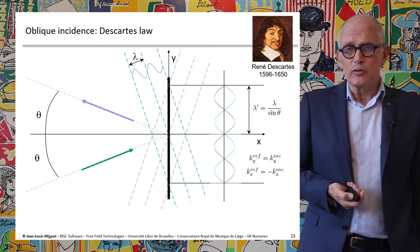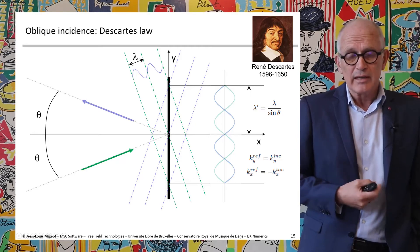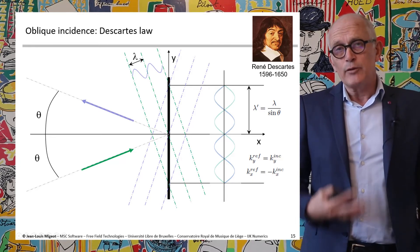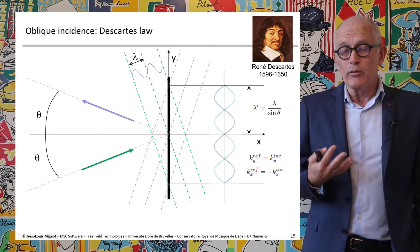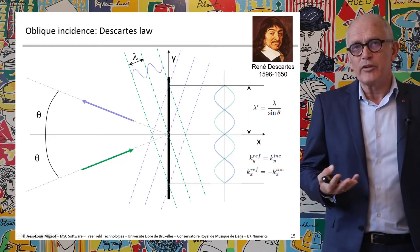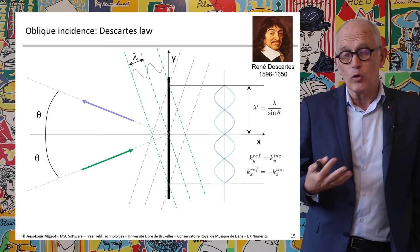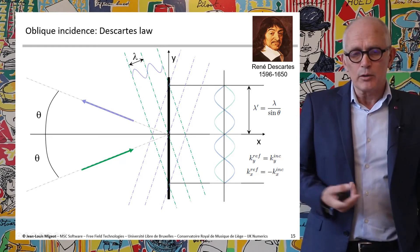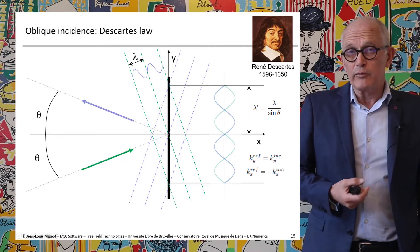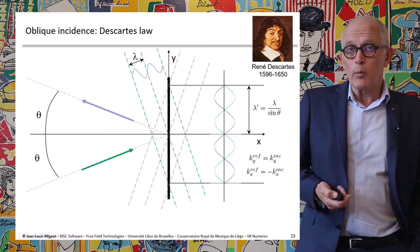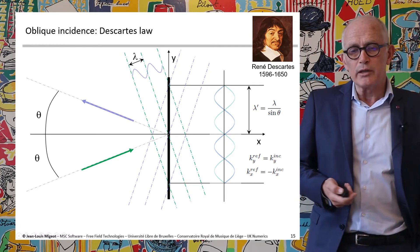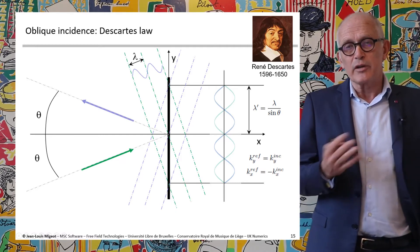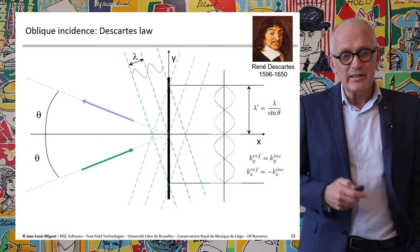If we consider a reflected wave, it will also have a certain trace on the wall. For the two velocity traces on the wall to cancel each other everywhere, the angle theta must be identical because the apparent wavelength must match. Since lambda is identical for both waves propagating in the same medium, sine theta must be equal. Furthermore, the wave number in the y direction must be identical for both waves, and they must have opposite signs along x so that the two velocity traces are dephased by 180 degrees.